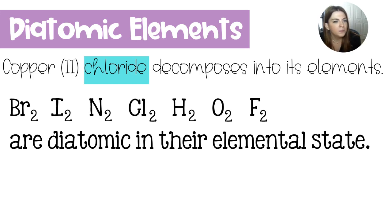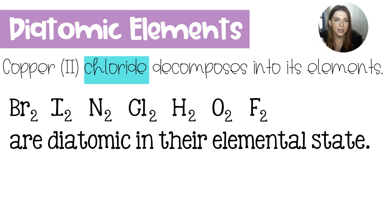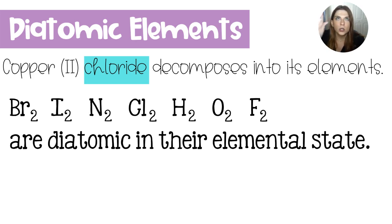Some teachers will say Hoff Brinkel. And if you look at the periodic table, nitrogen is number seven. If you highlight the diatomic elements, or just run over it with your finger, they all make a seven starting with element number seven. So that would be nitrogen, oxygen, fluorine, chlorine, bromine, and iodine. And then you just have to remember to grab hydrogen over from the left side of the table.